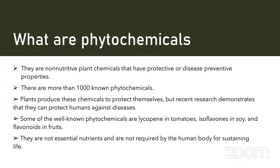Plants normally produce these chemicals to protect themselves, but recent research is using them to protect against human diseases. Some of the well-known phytochemicals are lycopenes in tomatoes, isoflavones from soy, and flavonoids from fruits. Mostly these phytochemicals are non-essential nutrients and the human body does not need them on a regular basis for sustaining life.